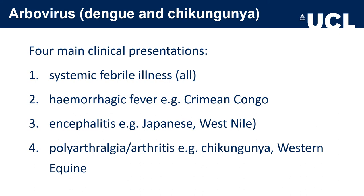Arboviruses are numerous — over 500 species — though illnesses in most patients are self-limiting. Examples include dengue and chikungunya. Some arboviruses are found throughout the tropics, while others are restricted to specific regions, such as tick-borne encephalitis in central and eastern Europe. There are four main clinical presentations: systemic febrile illness in all arboviruses; haemorrhagic fever such as dengue, yellow fever, Rift Valley fever and Crimean-Congo haemorrhagic fever; encephalitis such as Japanese encephalitis, West Nile and tick-borne encephalitis; and polyarthritis, seen in chikungunya, Ross River, Barmah Forest, Sindbis, and eastern and western equine viruses.